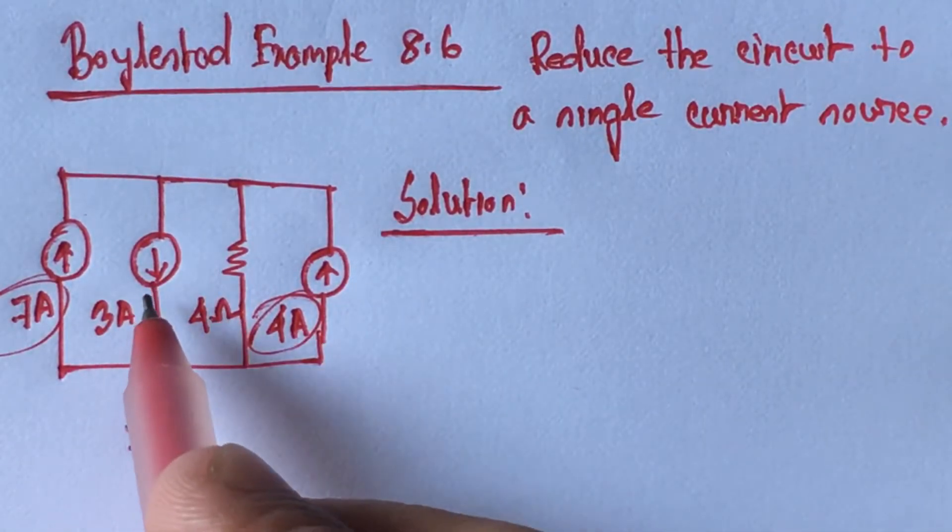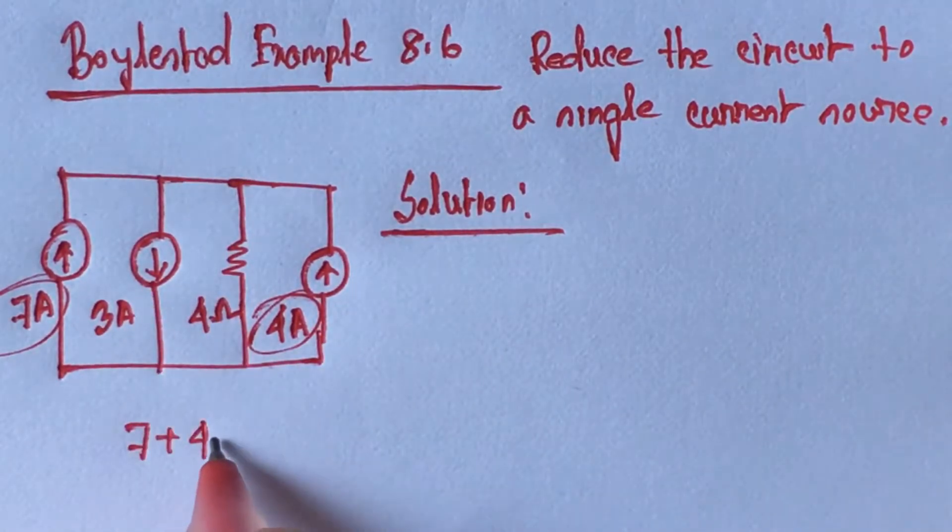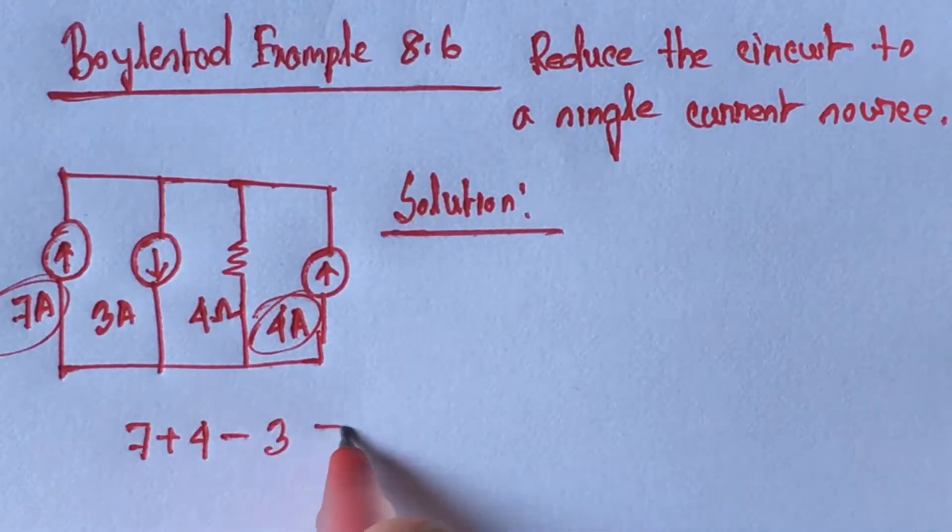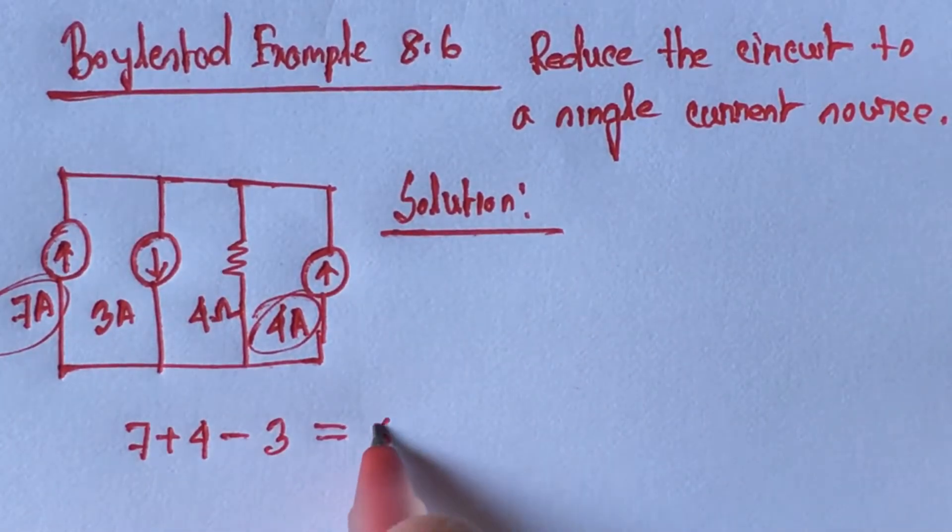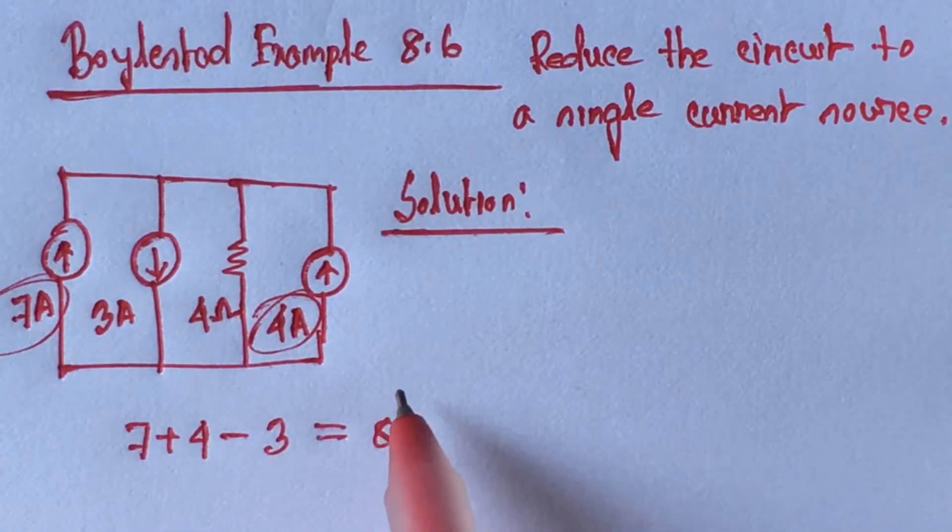Now 3 ampere current is flowing downward so this will be subtracted. Now we get the value as 8 ampere. So this is the equivalent current source value.